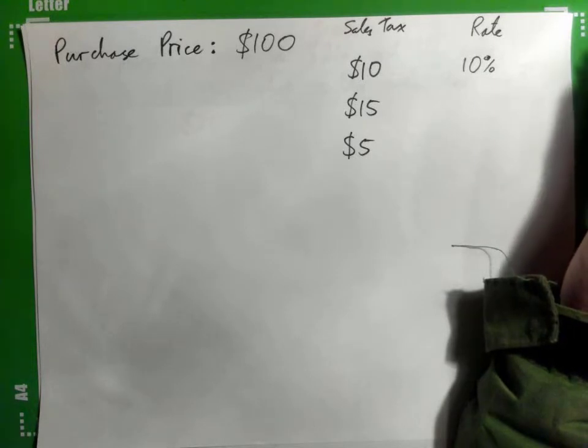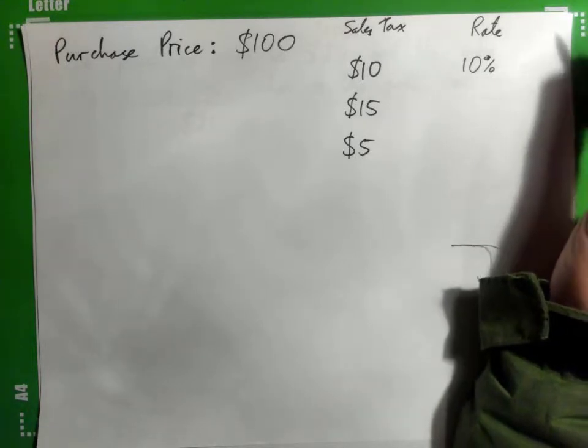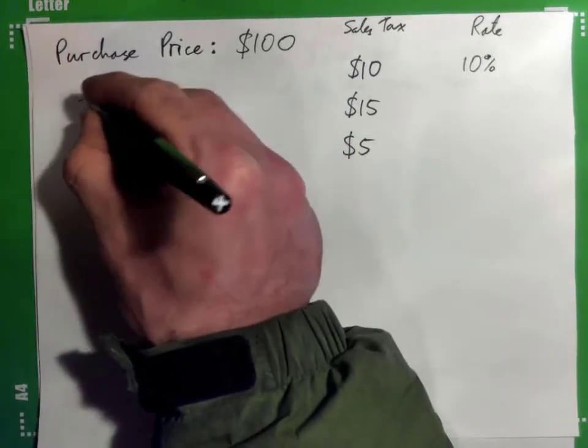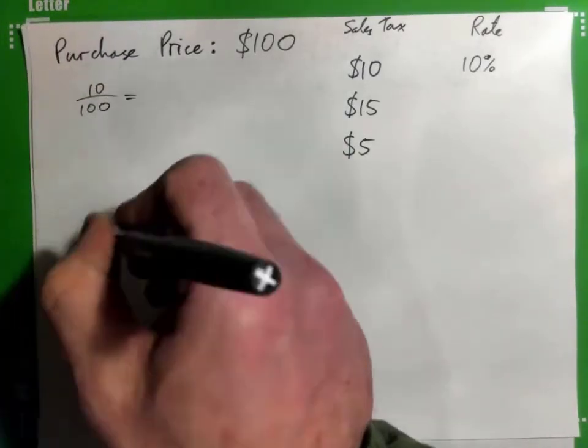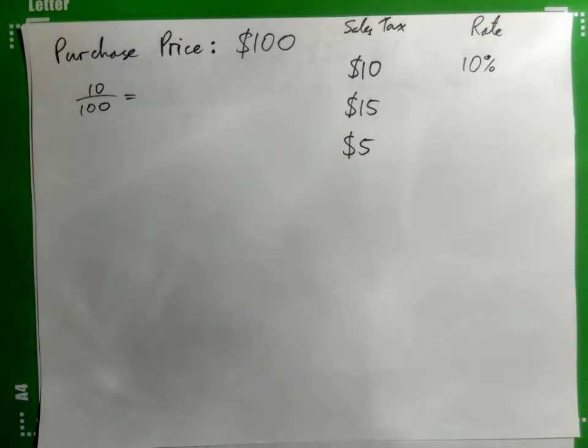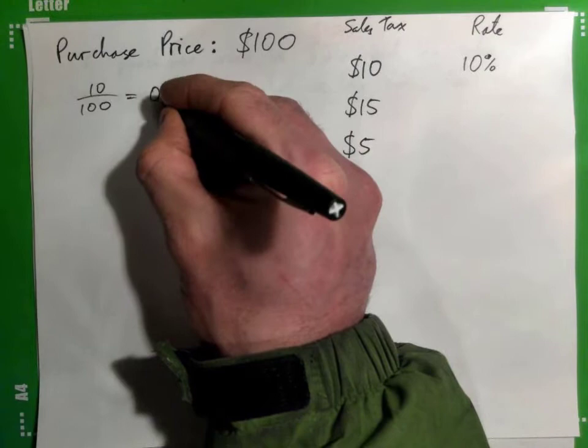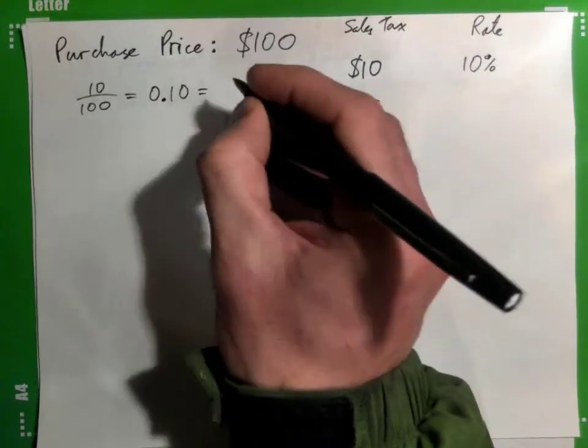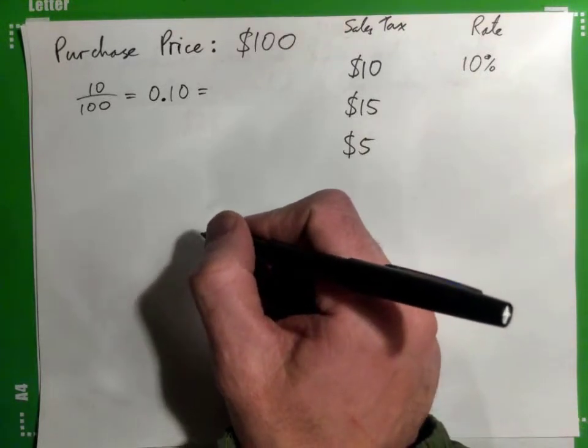Right, you could go 10 over 100, and that would give you what? 0.10, which is, right, that's the one way to do it.